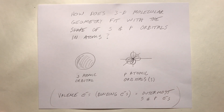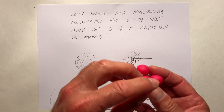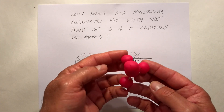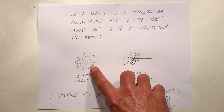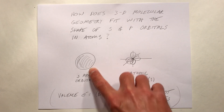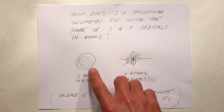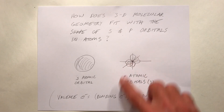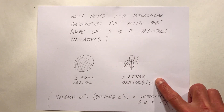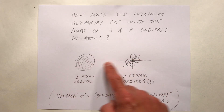But there are other theories out there. How does three-dimensional molecular geometry fit with the shape of S and P orbitals? How can you make a tetrahedral structure if the orbitals on the central atom are S orbitals — which are spherical — or P orbitals, which are dumbbell-shaped on the X, Y, and Z axes?